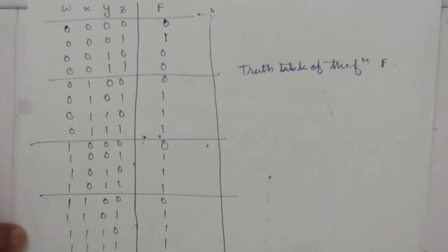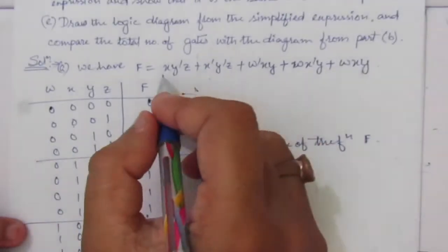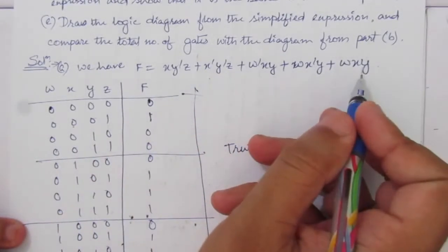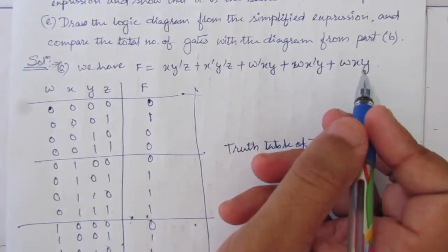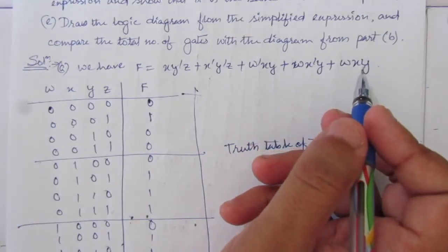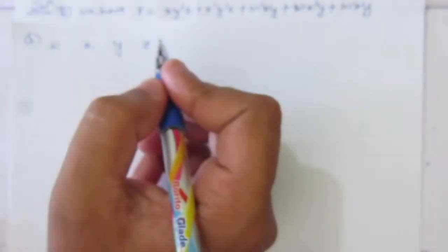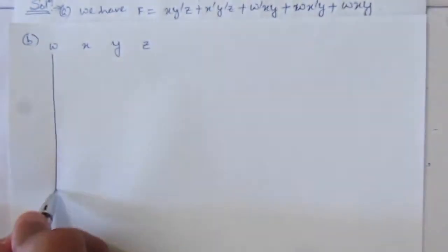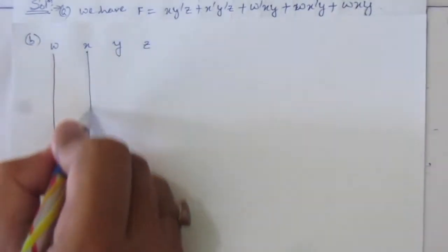Now the second part of the problem: we have to find out the logic diagram using the original Boolean expression. We will use this original expression to draw the logic diagram. So we will have four input variables: W, X, Y, and Z — these are the four input lines.